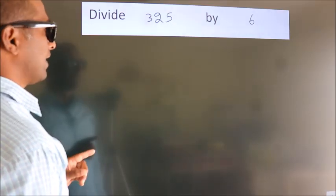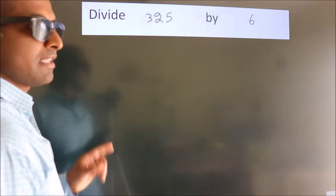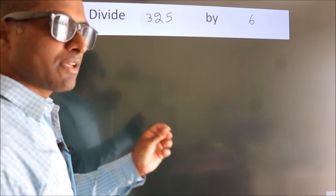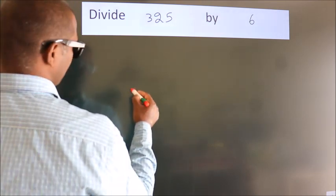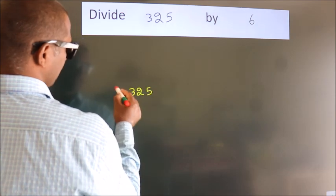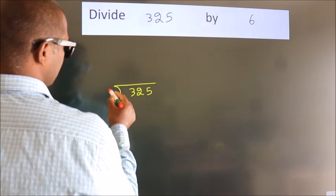Divide 325 by 6. To do this division, we should frame it in this way. 325 here, 6 here.